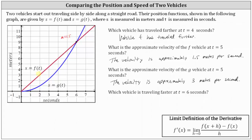So vehicle f is traveling 1.5 meters per second at t equals six seconds. To approximate the velocity of the g vehicle at t equals six seconds, we sketch the tangent line to the blue graph at this point. We can easily see the slope of this tangent line is going to be more than 1.5, and therefore vehicle g is traveling faster at t equals six seconds.